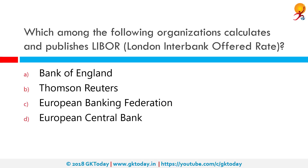Which among the following organizations calculates and publishes LIBOR, or London Interbank Offered Rate? The London Interbank Offered Rate is an interest rate average calculated from estimates submitted by the leading banks in London. Each bank estimates what it would be charged were it to borrow from other banks.